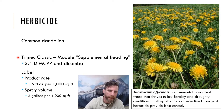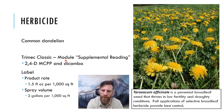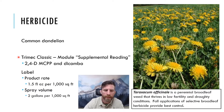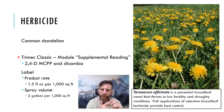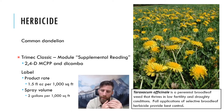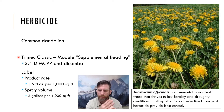For use on turf grass, Trimec Classic contains 2,4-D, MCPP, and Dicamba. You'll find the Trimec Classic label in the Supplemental Reading module on Canvas. It's a great selective post-emergent herbicide for control of perennial weeds like common dandelion, false dandelion, bull thistle, Canada thistle, prickle lettuce, buckhorn, and broadleaf plantain — so it's good for dandelions, plantains, and thistles.